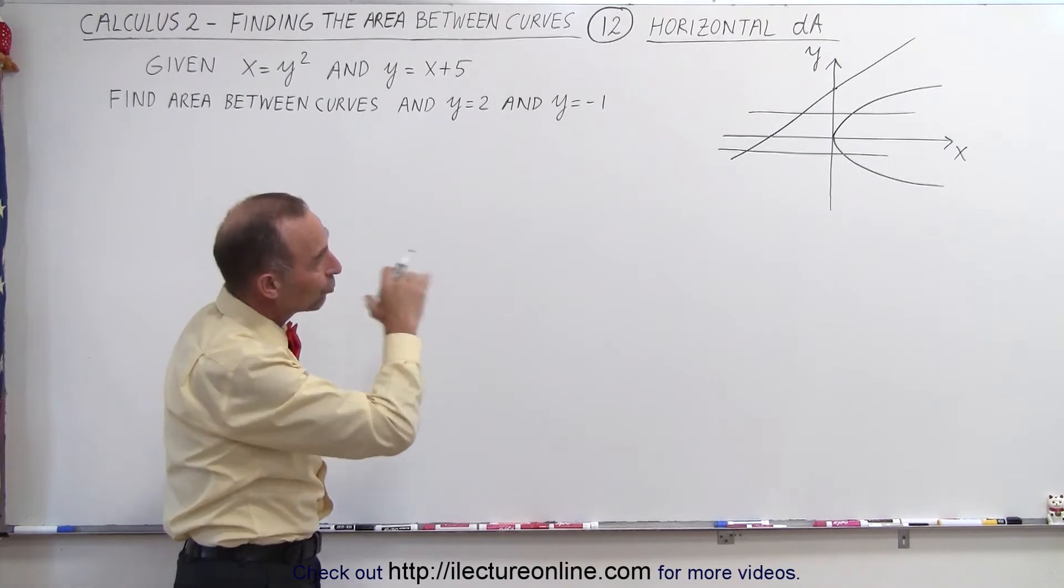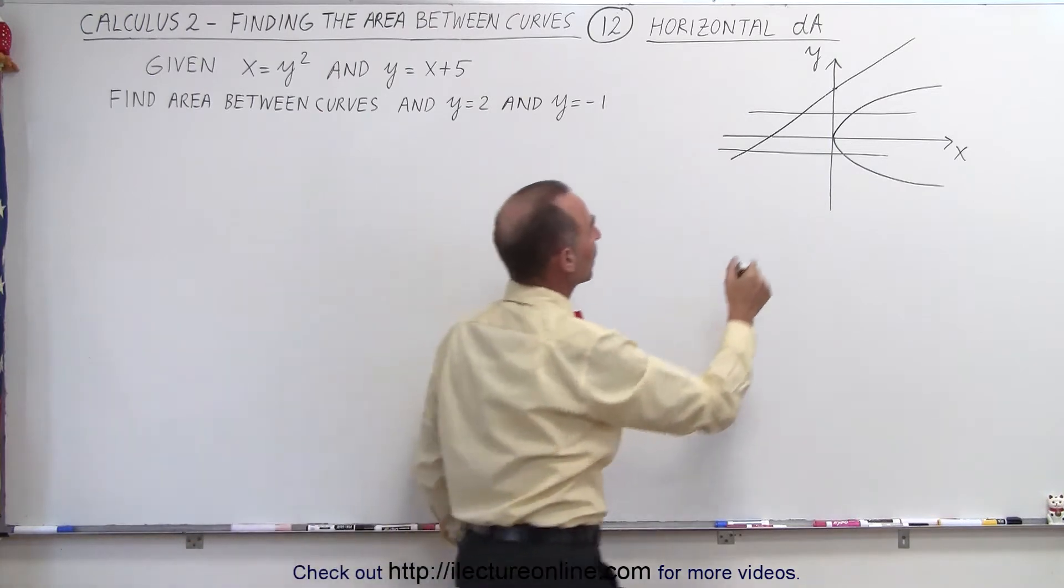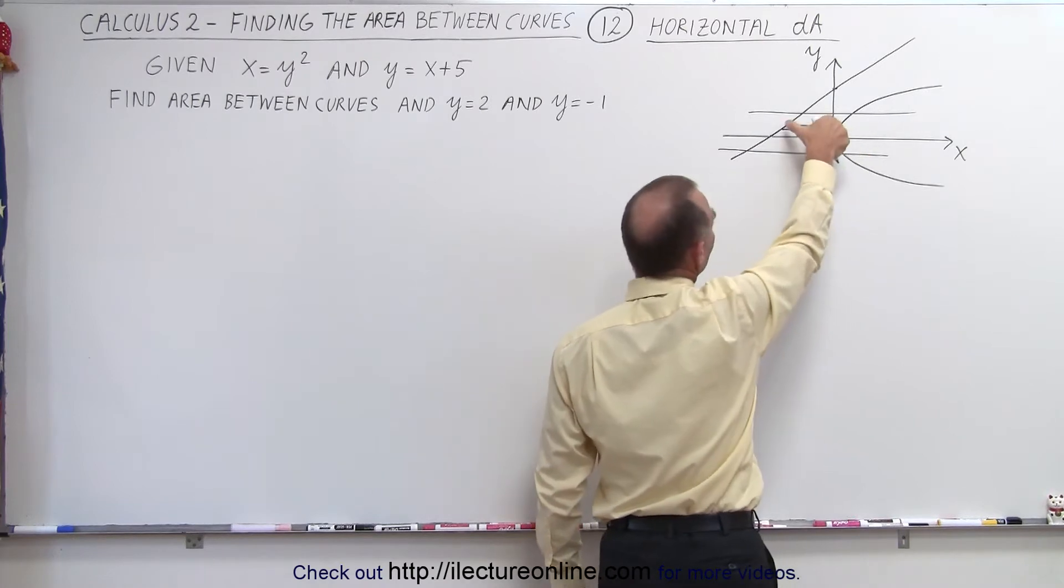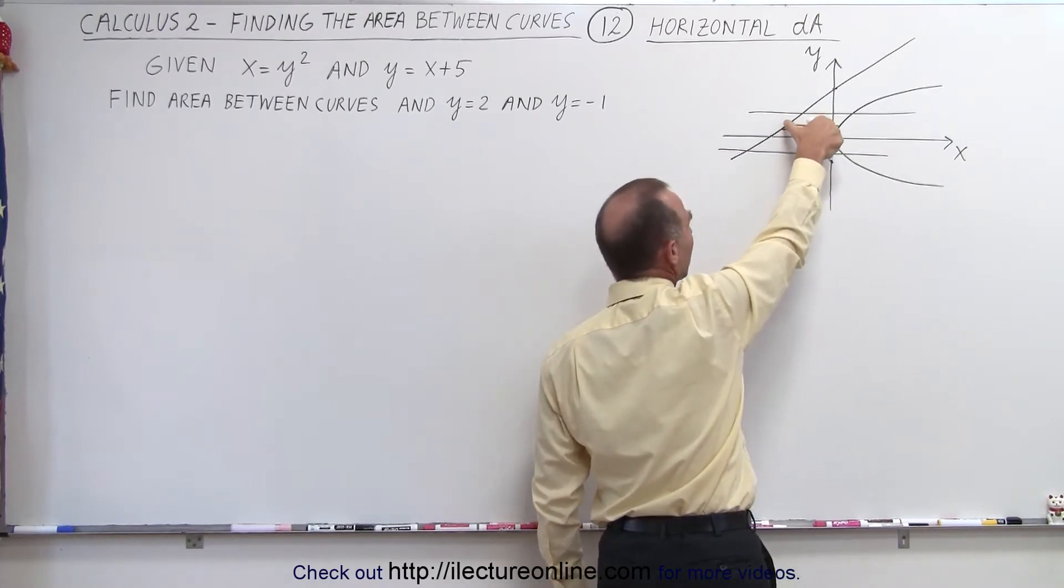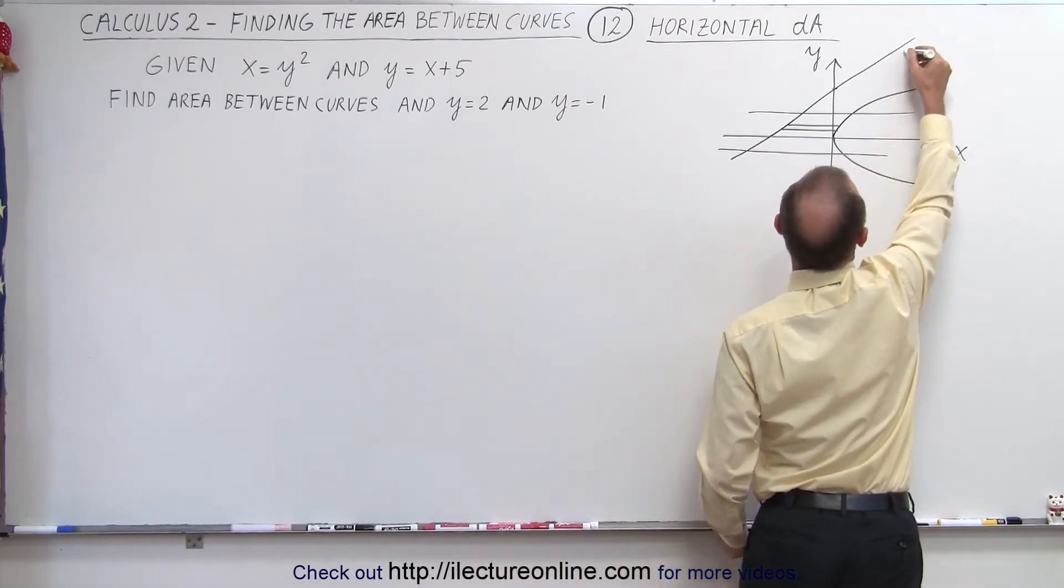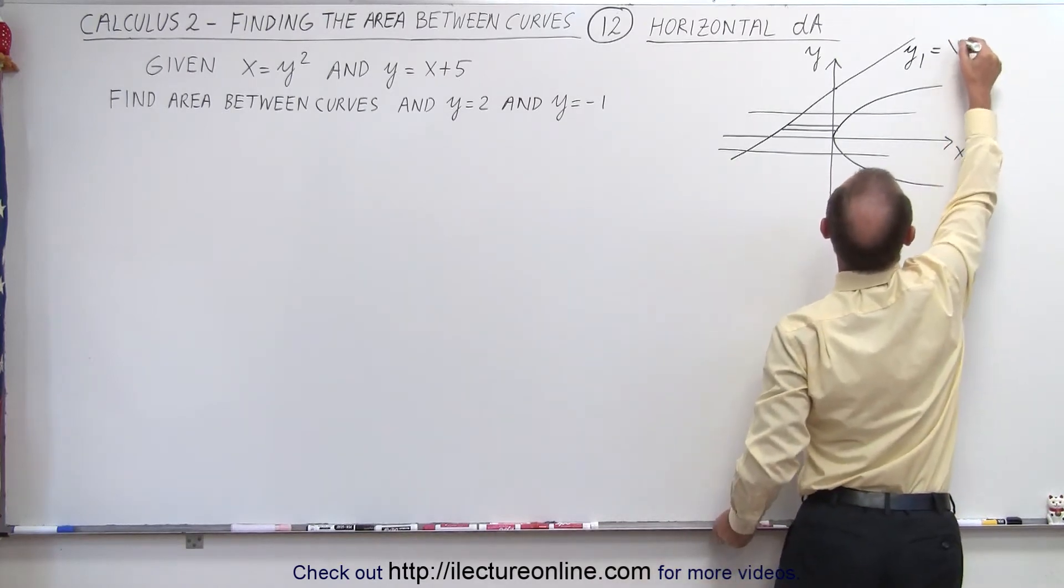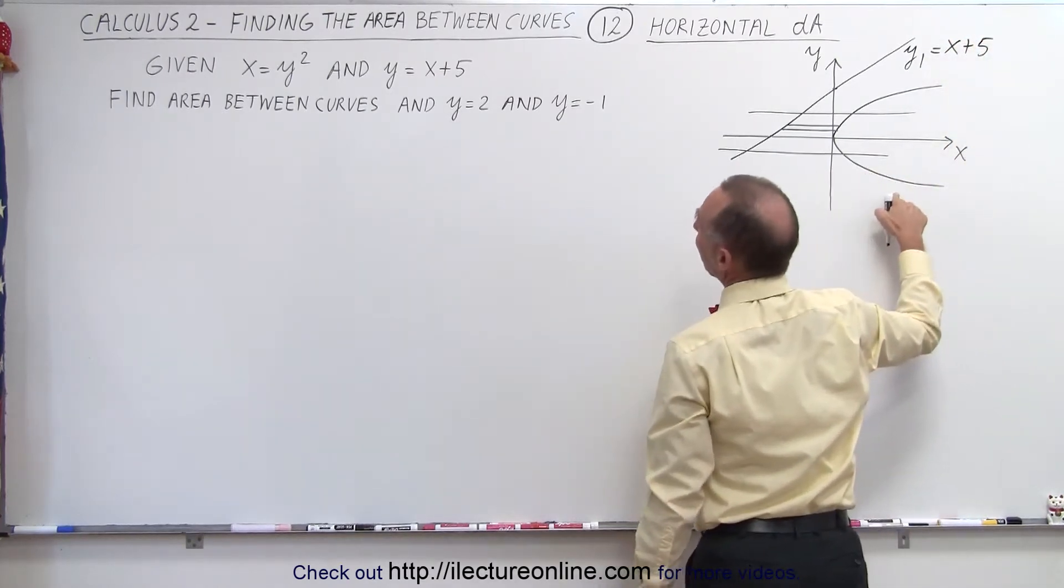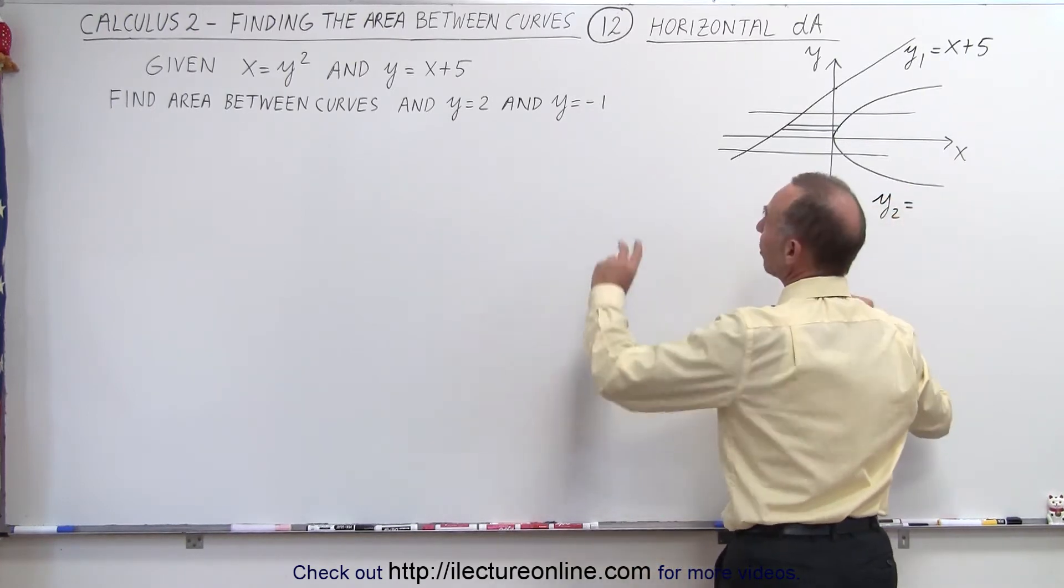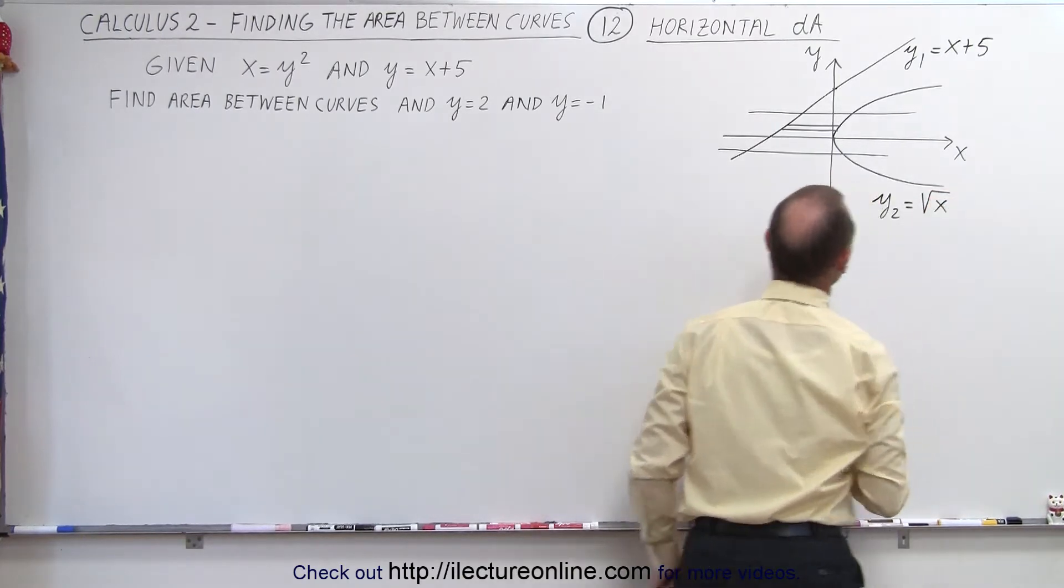Notice that if we draw the area element dA sideways, we have a horizontal dA that we could probably manage the easiest, because in this way you can see that the length of dA is always going to be between the two curves. So if we call this curve here y1, let's call that x plus 5, and here we call this y2, and we can say that y2 is equal, if we take the square root of both sides, that would be equal to the square root of x.